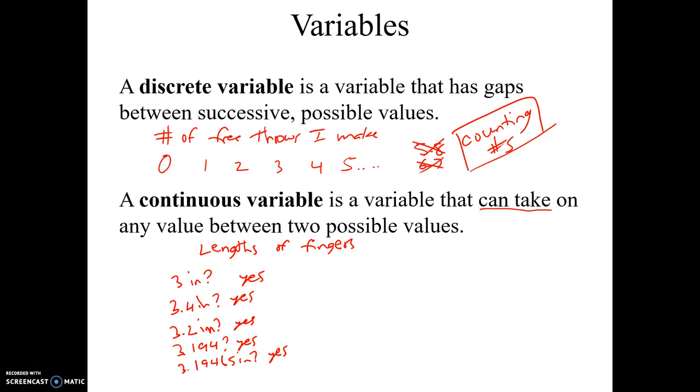So as you can see, when you talk about something like measuring a length, you're not limited by just counting numbers like 0, 1, 2, 3. You can have decimals. And because you can have decimals, you can take on any value between 3 and 3.4, like 3.2. You can take decimals. Those variables are continuous.